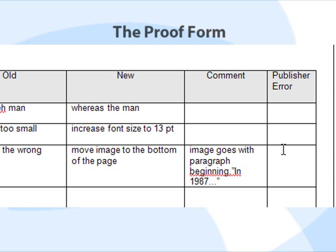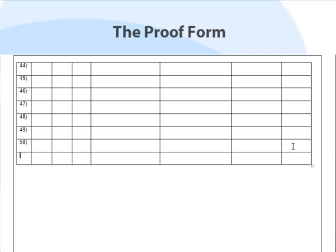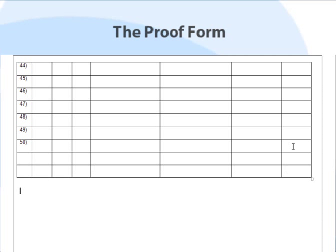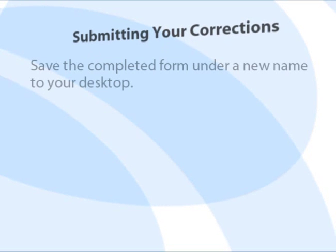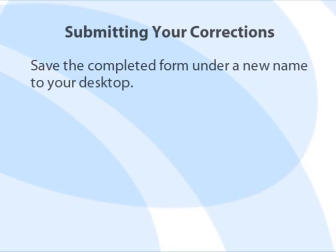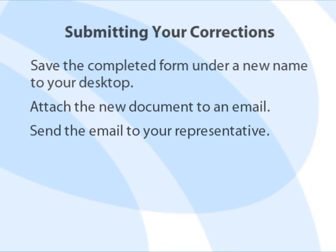Finally, if the error is a publisher error, place an X in the last column — this is so that you do not get charged for any publisher errors. 50 lines are included in the form, but if you have more than 50 corrections, you can add additional lines by clicking inside the last block and hitting the tab key. You can continue tabbing to add however many lines you need. When you're finished filling out the form, save it under a new name to your desktop. Then attach the new document to an email and send it to your representative.